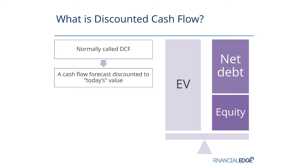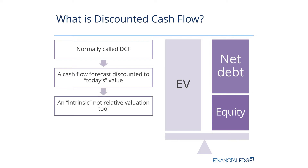So for a variety of reasons, we prefer money now — money now has greater value. What we do in a discounted cash flow is take the cash flows for many years into the future and discount them back to today, to find out what the value of all of those cash flows might be today.